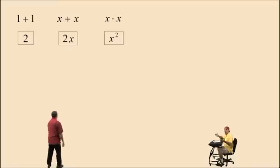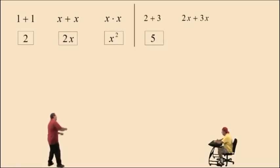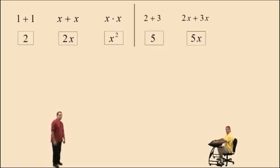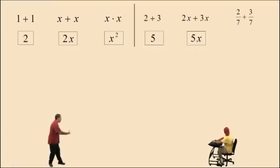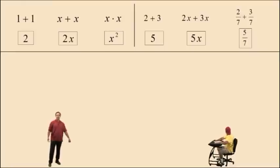Now, 2 plus 3 is 5. So Charlie, what's 2x's plus 3 more x's? 5x's. That's right, it's 5x. Now Charlie, what's 2 sevenths plus 3 more sevenths? 5 sevenths. That's right, 5 sevenths. There you go.